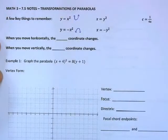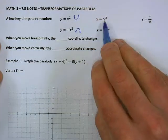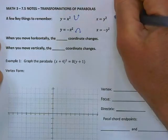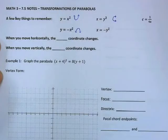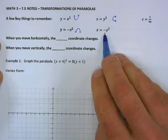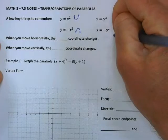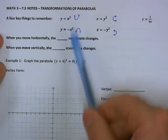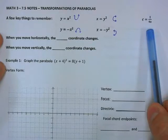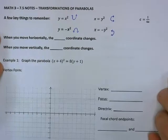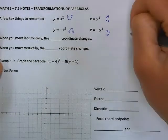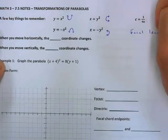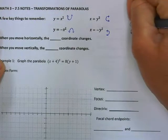Those are two up-down parabolas. If it's x equals a positive a value times y squared, it's going to be opening to the right. If it's x equals a negative a value, that's going to be opening to the left. No matter which of these four scenarios it is, we always need the focal length equation — that's always going to help us find our focus, directrix, and focal chord endpoints.